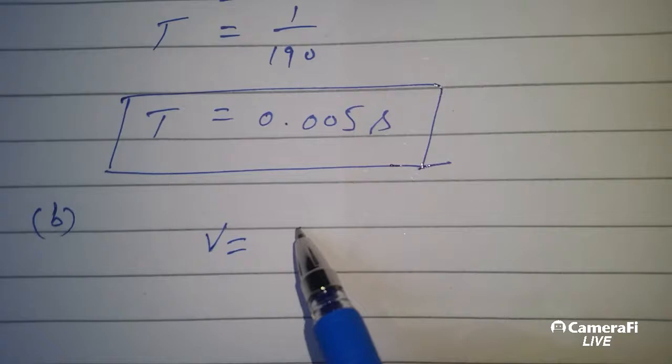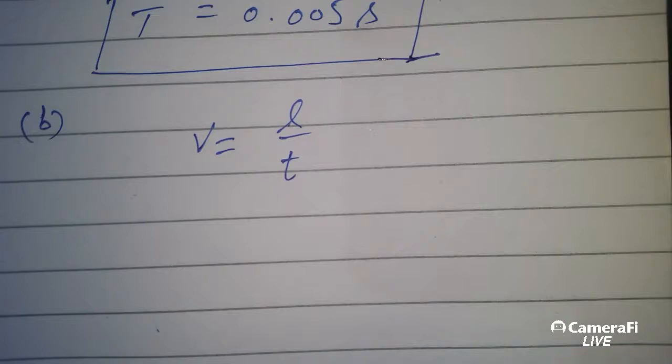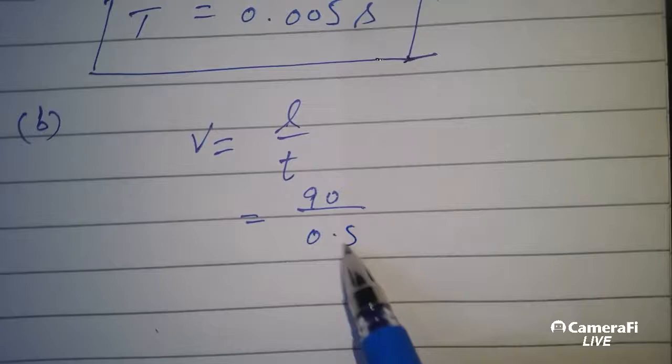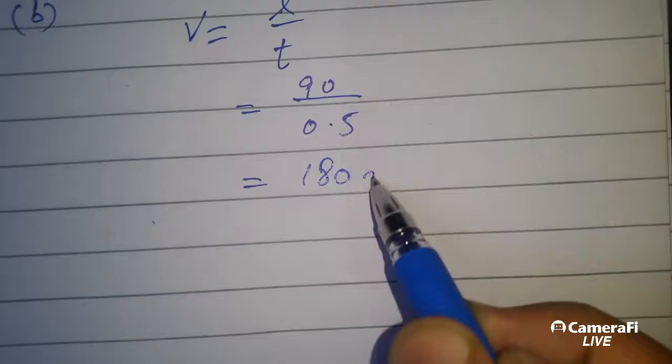V is equal to L over t, and L is 90 m and t is 0.5. So v is equal to 180 m per second.